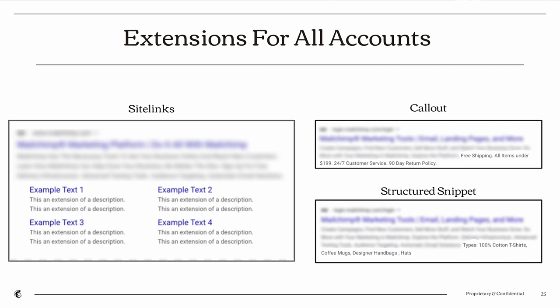Site links are probably the most commonly used extension — I'd highly recommend having at least four live for any business. Be sure to include descriptions with your site links; many advertisers skip descriptions to move fast, but descriptions help build out your ad and take up more real estate on the results page.